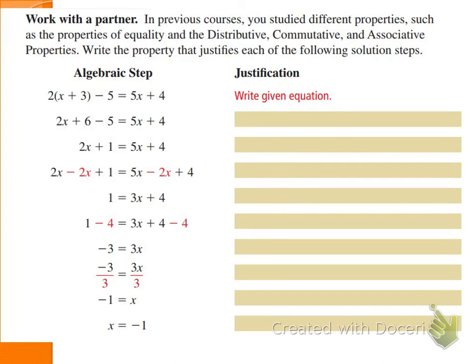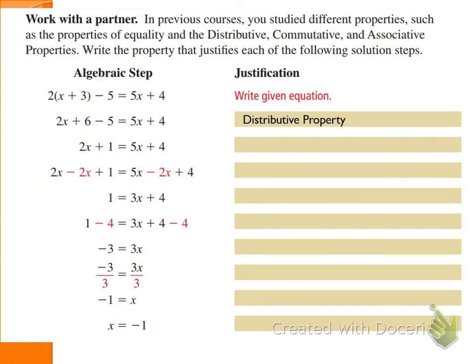The math is already solved for us — we just need to write what steps they did. The first step: they distributed the 2 in, getting 2x and then 2 times 3 equals 6. That is the distributive property — not 'of equality.' You can write 'distrib prop.' The next thing that happened: they went from plus 6 minus 5 to positive 1 — that is combining like terms. It's not a property of equality; they didn't subtract 5 on both sides. They just combined plus 6 minus 5 — combining like terms.